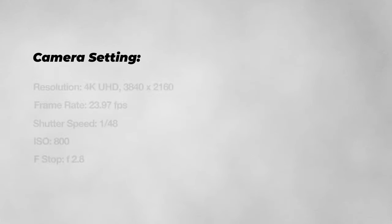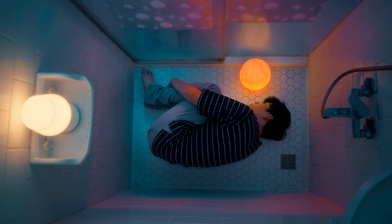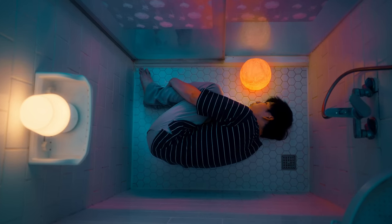Finally, after finishing the lighting setup, the last thing before shooting is to make sure you have all the camera settings right. Here are all the camera settings I used for this shot. Depending on your situation and location, you can adjust the settings for your own circumstances to get the best result. Once you confirm your subject's focus point or autofocus system is working properly, you can start shooting.